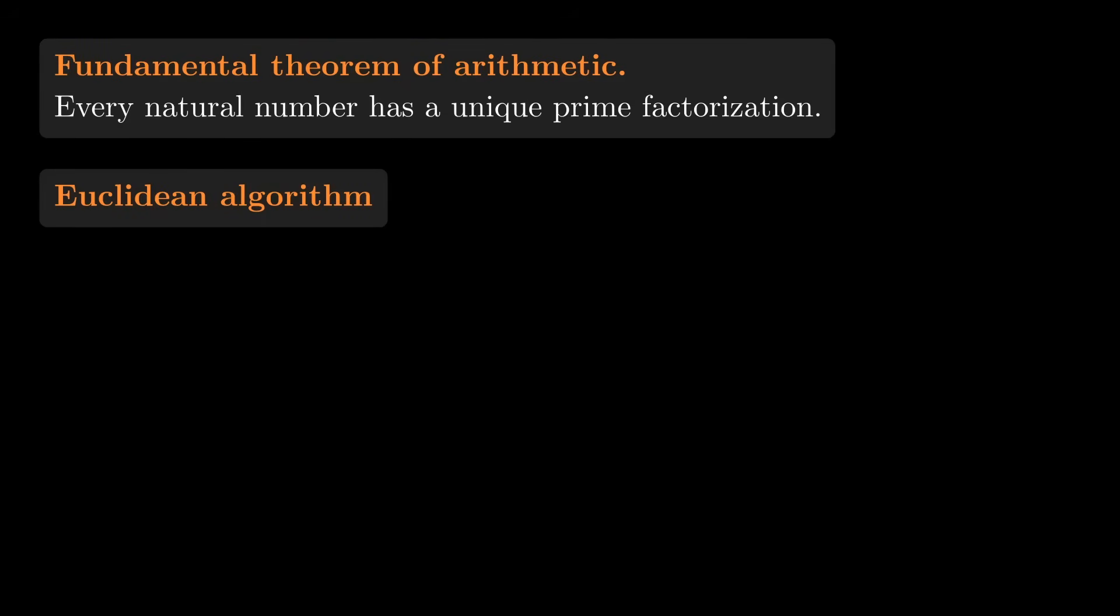On the surface, that would make no sense, because if a proof is going to work for every natural number, there shouldn't be any computation involved. But it turns out that the Euclidean algorithm gives us more than just the GCD. It gives us some extra information, and that's what we'll need to understand why the fundamental theorem of arithmetic is true.